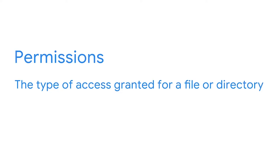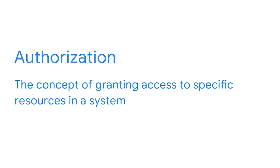Permissions are the type of access granted for a file or directory. Permissions are related to authorization. Authorization is the concept of granting access to specific resources in a system, and it allows you to limit access to specified files or directories. A good rule to follow is that data access is on a need-to-know basis. You can imagine the security risk it would impose if anyone could access or modify anything they wanted on a system.